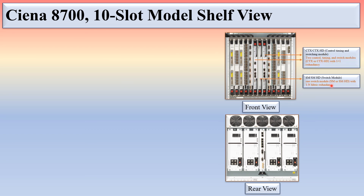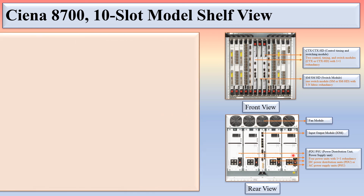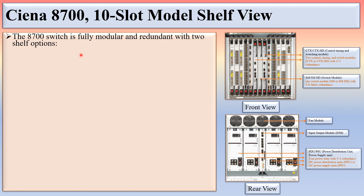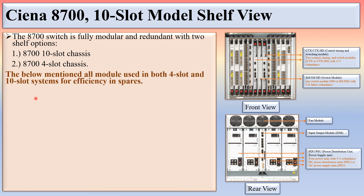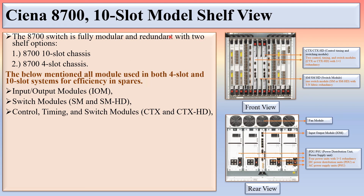Slots are fixed for CTX cards, and between the CTX modules is the switch module. The rear view shows the fan module, input/output module, and four power supply units. The 8700 switch is fully modular with two shelf options: the 8700 10-slot chassis and the 8700 4-slot chassis. All modules — fan, IOM, switch modules, and control timing and switch modules — are used in both the 4-slot and 10-slot systems.